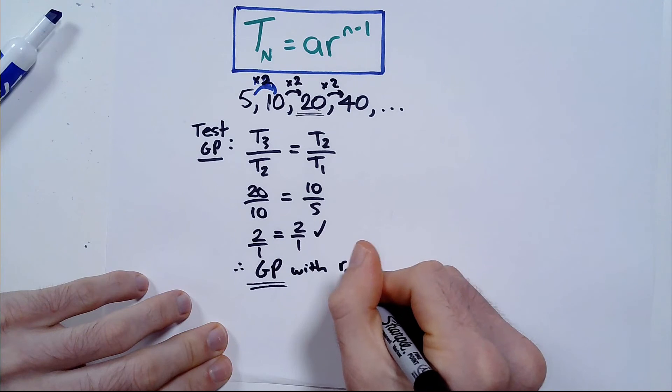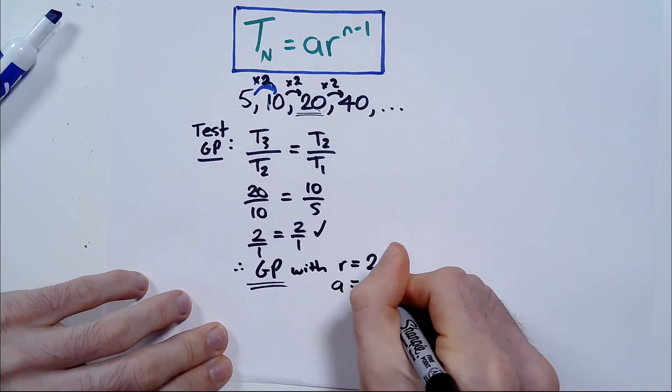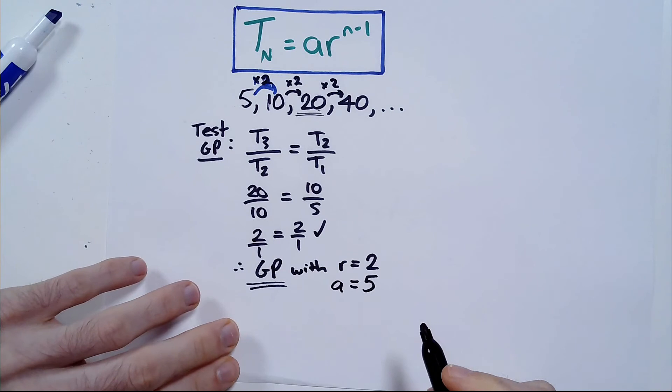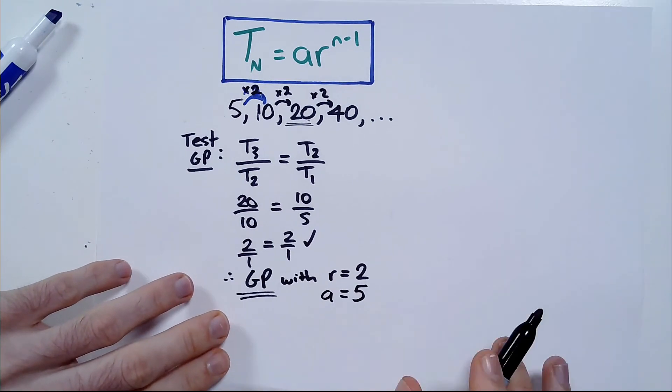We also know the common ratio is 2, we know that the first term is 5, and that's always important. The first term is called A, and that is 5. Okay, great.